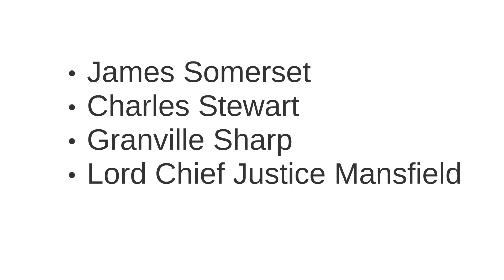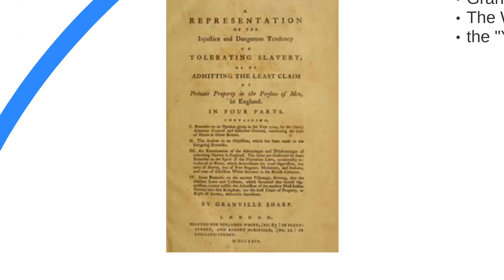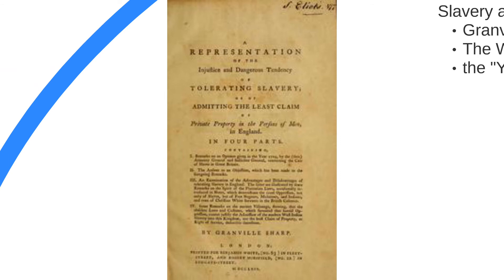James had befriended many in the free black community, and they had some industrious and even powerful allies among London's anti-slavery crowd. Now, just to be clear, there was no real anti-slavery movement in the sense of a large and organized group of people at this time. But several people with strong anti-slavery convictions had been loudly making trouble for slaveholders. Chief among them was a man named Granville Sharp, who had published a treatise in 1769 — the title being A Representation of the Injustice and Dangerous Tendency of Tolerating Slavery, or of Admitting the Least Claim of Private Property in the Persons of Men, in England.